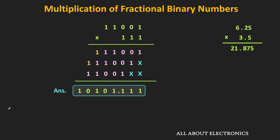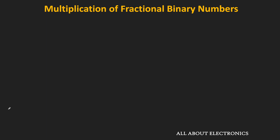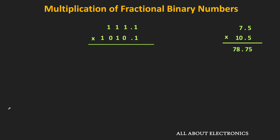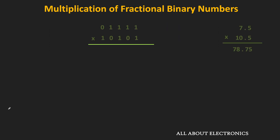Let's take one more example. We want to multiply two fractional numbers with decimal equivalents 7.5 and 10.5, and the product will be equal to 78.75. In both numbers, the number of digits after the binary point is equal to 1. So let us ignore the binary points and multiply these two numbers as normal binary numbers. Starting from the LSB of the multiplier, the first digit is equal to 1. If we multiply it with the multiplicand, the result will be same as the multiplicand — that is equal to 01111.